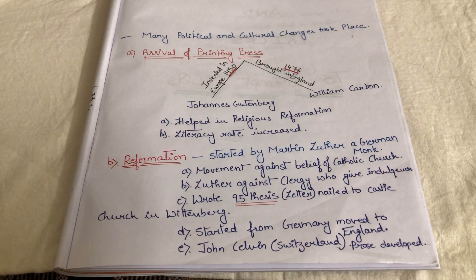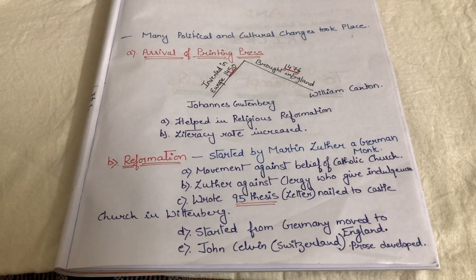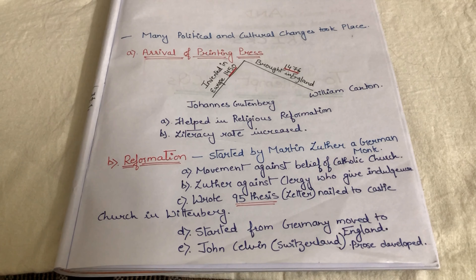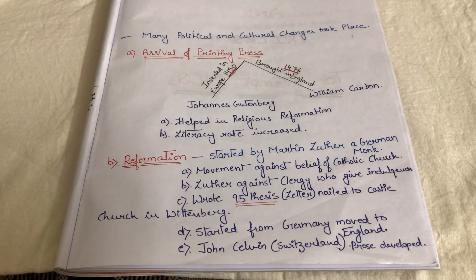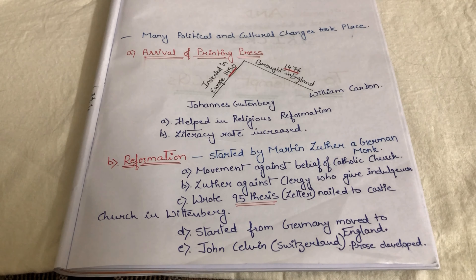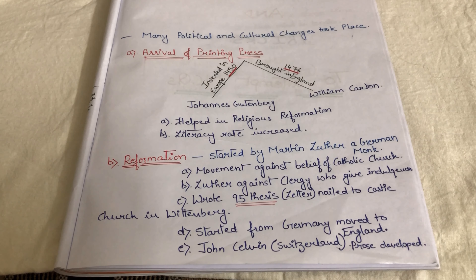Two important things happened due to the arrival of the printing press: it helped in religious reformation and the literacy rate increased. Before the arrival of the printing press, people were all dependent on the church for the answers to their questions. But when the printing press arrived, a large number of books were printed, so people had literary sources and literacy rate automatically increased.